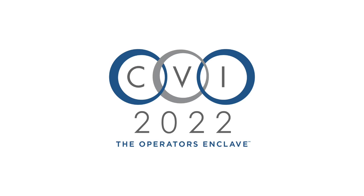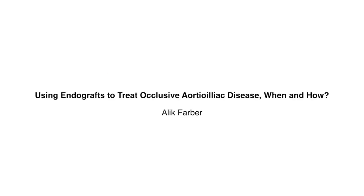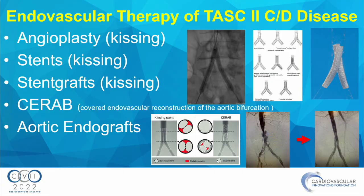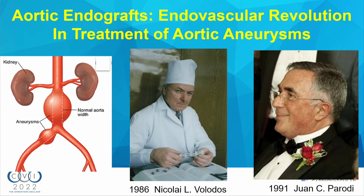When thinking about endovascular treatment for aortoiliac disease — severe aortoiliac disease — you narrow down to either doing angioplasty, usually kissing, which is pretty rare these days. You pretty much have to use a stent or a stent graft. There's C-Rab, and then there are aortic endografts. Aortic endografts really came about as part of the endovascular revolution in the treatment of aortic aneurysms.